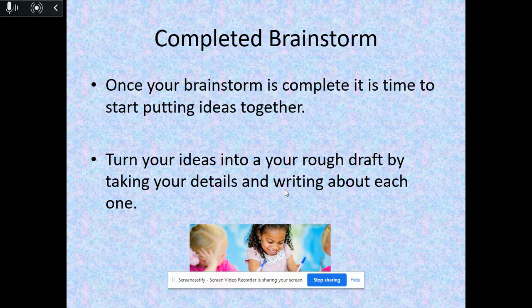So after you've completed your brainstorm, after you've watched the video and filled out your idea web, now it's time to start putting your ideas together. Look at your brainstorm and think about what you want to write first. Pick out the most important details about why plants are important. Choose at least three ideas and write about them in detail — pick one idea and write one or two sentences explaining what that idea is about.